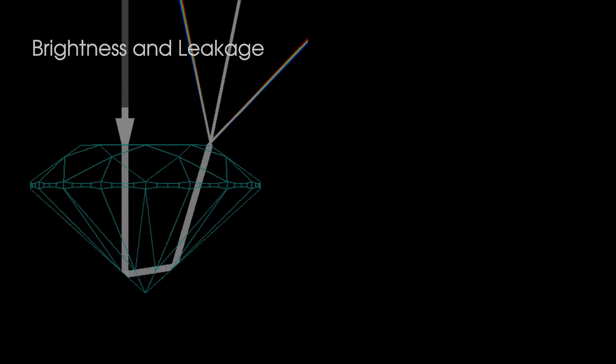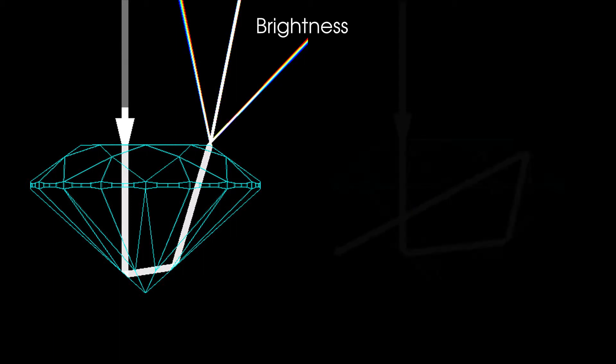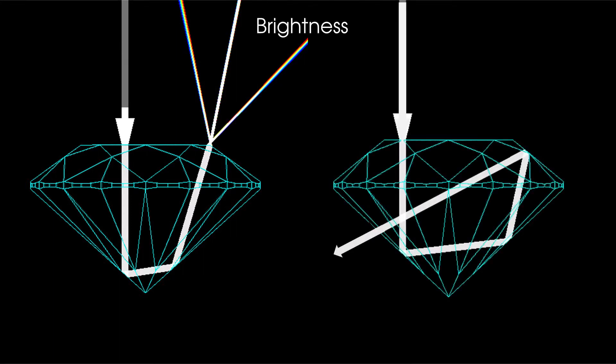Depending on how it was cut, light entering a diamond will either reflect and come up to the viewer's eyes as brightness, or escape through the bottom as leakage or windowing, causing dark areas.